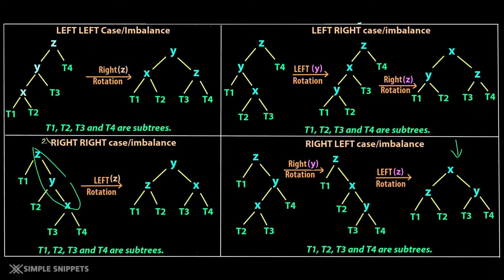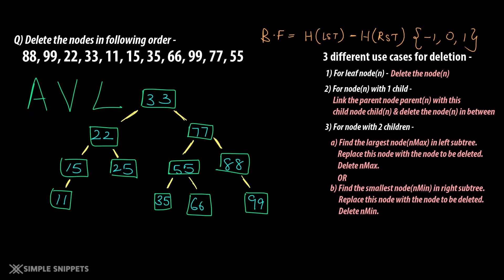We've already discussed the four different rotations required to do the balancing and the four different cases — do check the previous videos for that. Now we already know that this is a binary search tree which is balanced, but ultimately it is a binary search tree. So the deletion process will be the same as we did in the deletion of a node from a binary search tree. However, once you delete a node, we have to keep calculating the balance factor for every node to check whether the tree is still balanced or not. That is one extra step.